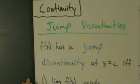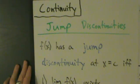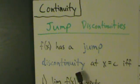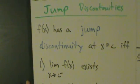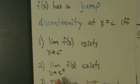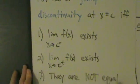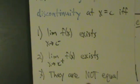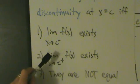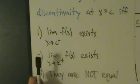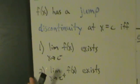Let's talk about another type of discontinuity. This one's called a jump discontinuity. f of x has a jump discontinuity at x equals c if and only if the left-hand limit as x approaches c of f of x exists, the right-hand limit at c also exists, and they are not equal. So if both of the one-sided limits exist but they're not equal to each other, then you have a jump discontinuity.